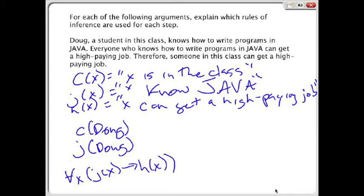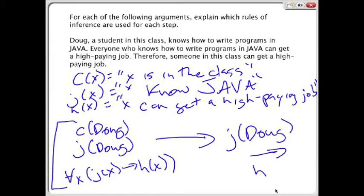At this point, this is where we use universal instantiation. We have the initial three statements that we can start with from the problem, and then we have the three premises that are given to us from the problem. Then, by universal instantiation, we conclude that since Doug knows Java, then Doug will get a high paying job.